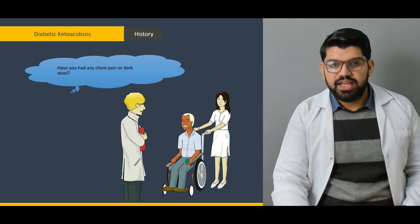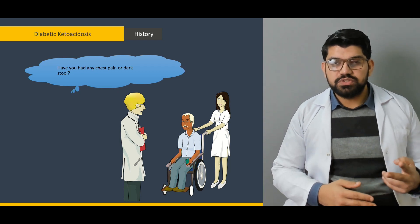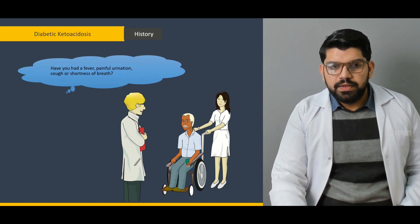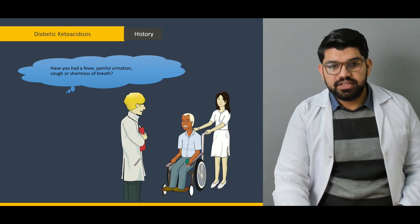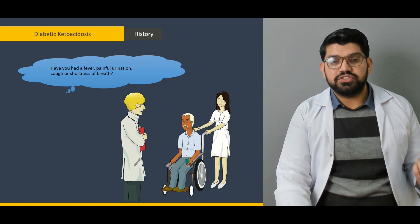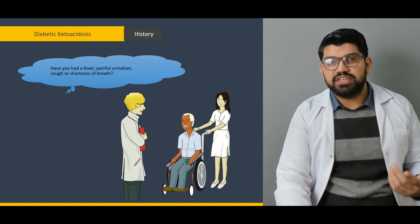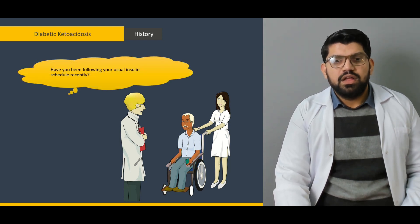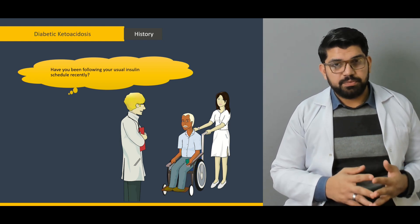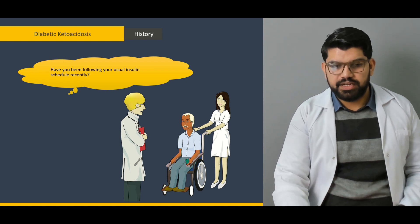Ask about any changes in diet. Have you had any chest pain or dark stool? Look for MI — myocardial infarction is life-threatening. Dark stools: look for melena, ask about GI bleed. Fever, painful urination, and shortness of breath — fever hints at infection; painful urination suggests urinary tract infections; shortness of breath may indicate complications of deranged renal function or myocardial ischemia. Ask if the patient has been following their usual insulin schedule recently, as missed or inadequate insulin can present with diabetic ketoacidosis.